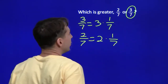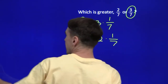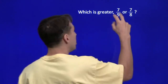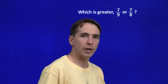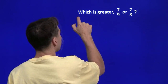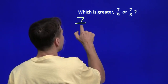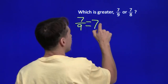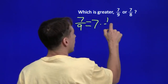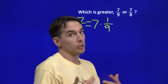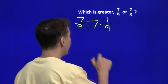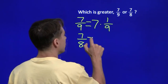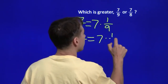Now that we know how to handle fractions with the same denominator, let's look at fractions with the same numerator. We can think of seven-ninths as seven times one-ninth, and seven-eighths, of course, is seven times one-eighth.